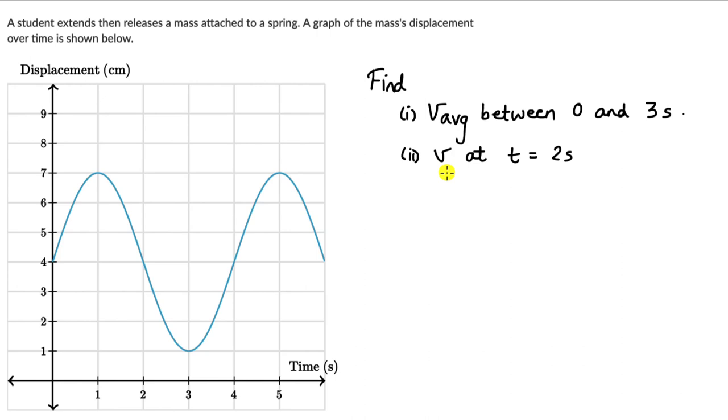Let's solve a question on finding average velocity and instantaneous velocity from a displacement-time graph for simple harmonic motion. Here we have a student who extends then releases a mass attached to a spring, and a graph of the mass's displacement over time is shown below.